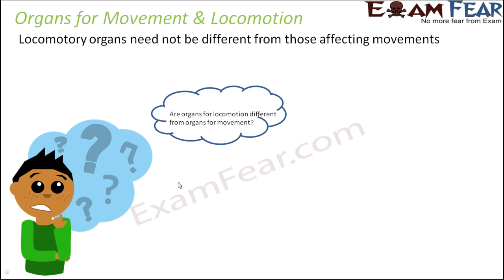For example, consider legs. The legs can move, and fingers can also move. When only the fingers are moving, the person is not moving from one place to another — that's movement. But when the legs move during walking, the person overall moves from one place to another — that's locomotion. So the same organs can act as organs for movement or locomotion.